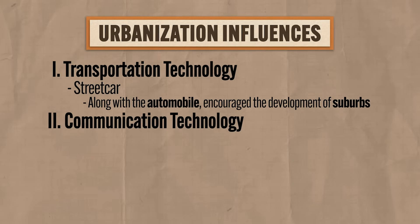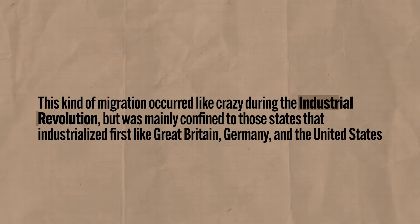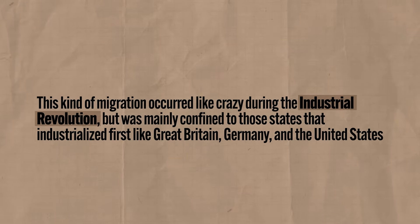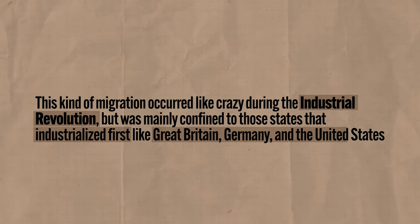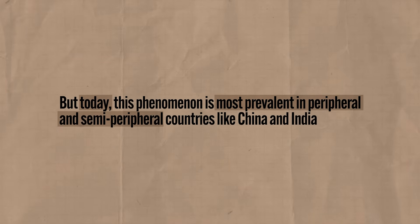The third factor influencing urbanization is population growth and migration. As rural populations grow, people often lack opportunities to find work, and that leads to significant rural-to-urban migration, drawing more people to the cities to find jobs. This kind of migration happened intensely during the industrial revolution, mainly in states that industrialized first like Great Britain, Germany, and the United States. But today this phenomenon is most prevalent in periphery and semi-periphery countries like China and India.